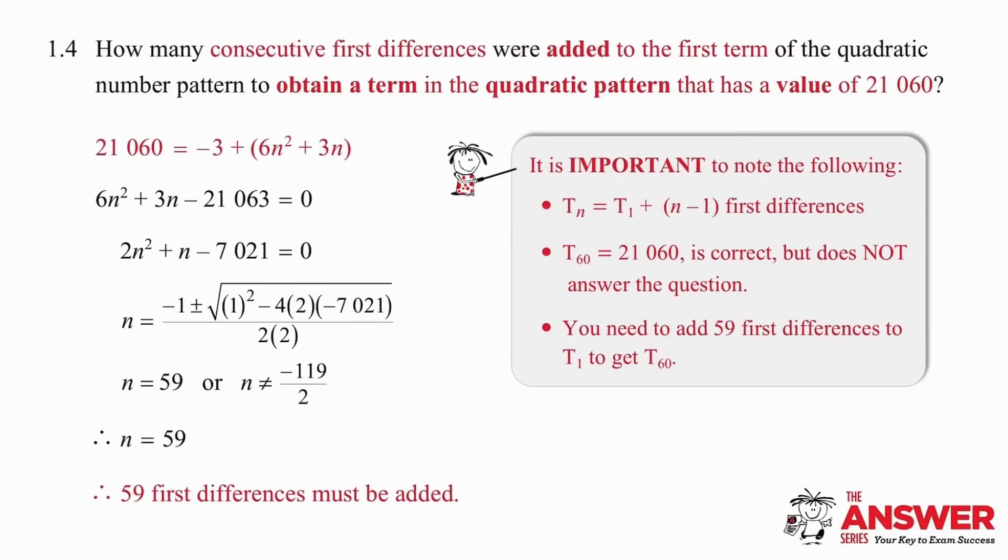Question 1.4 is rather challenging and we need to process this carefully. They are asking us how many consecutive first differences were added to the first term of the quadratic number pattern to obtain a term in the quadratic pattern that has a value of 21,060.